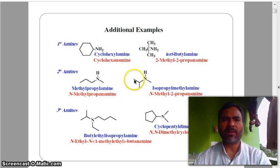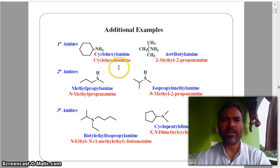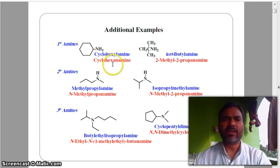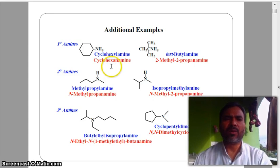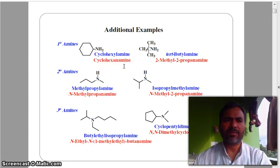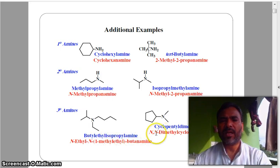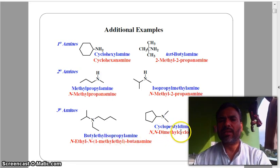Now additional examples of 1° amines. You see cyclohexylamine and cyclohexanamine. And tert-butyl, isopropylmethylamine, and N-isopropyl-2-propanamine. Butylpropylamine and N,N-dimethylcyclohexanamine.